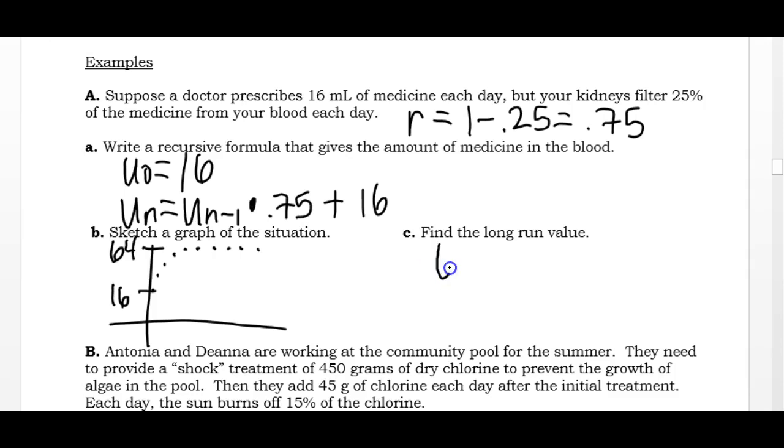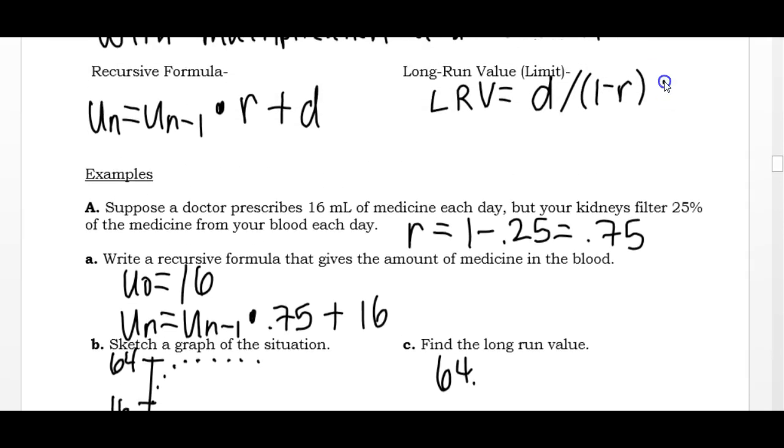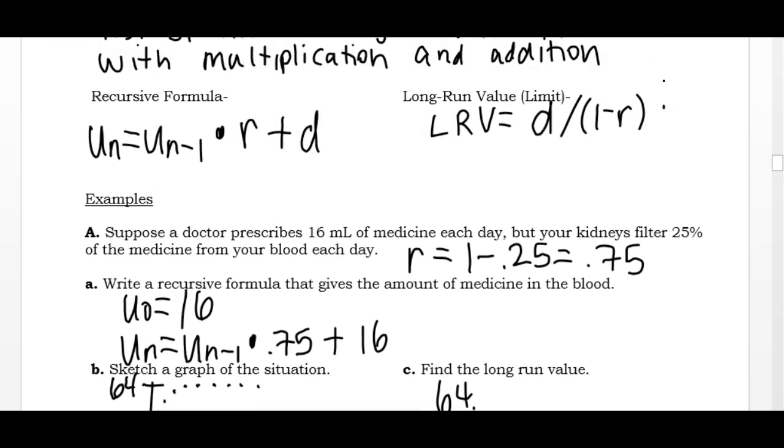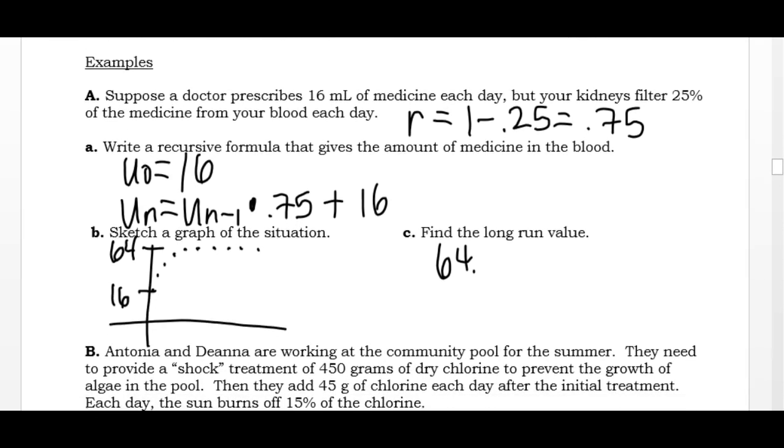So I already know the long-run value is 64. I use my calculator, kind of a long way to figure that out, but I am going to use the formula that I gave right here to get the same answer. So to get the long-run value, we would take the starting number, divide it by 1 minus the ratio, and make sure we're using the ratio that we're actually multiplying by, not the percentage that we were given.